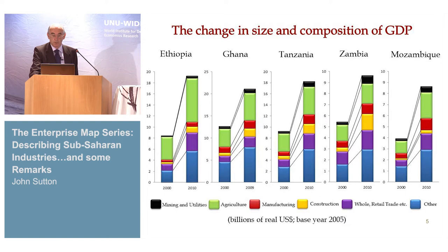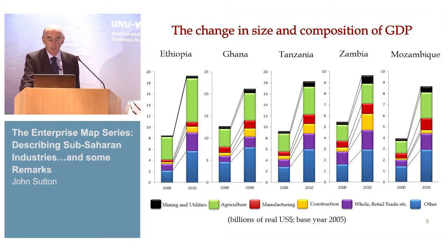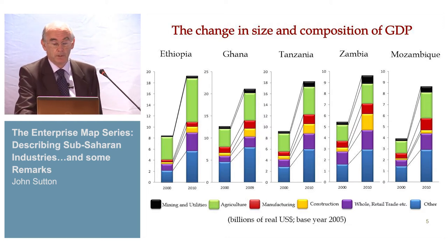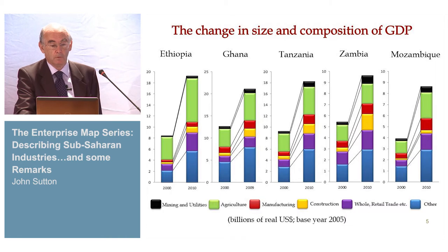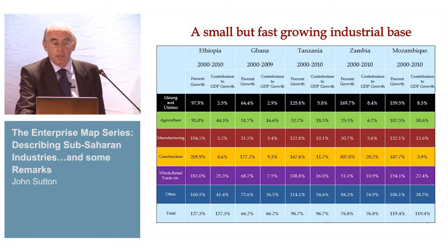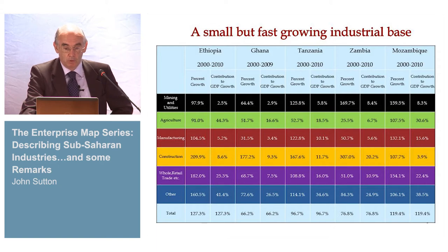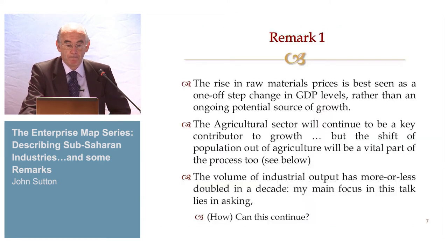Agriculture, including agribusiness, has played a very large part in this growth, as is inevitable given the huge size of the initial base. The industrial sector — defined here as manufacturing, agribusiness, and construction — has been starting from a much smaller base, but it's been growing impressively, on average doubling in a decade across these countries. The question is: what kind of industrial structure do we have, and why does this growth come from? The industrial base has been growing at an impressive rate, different from one country to another, but broadly doubling in a decade.